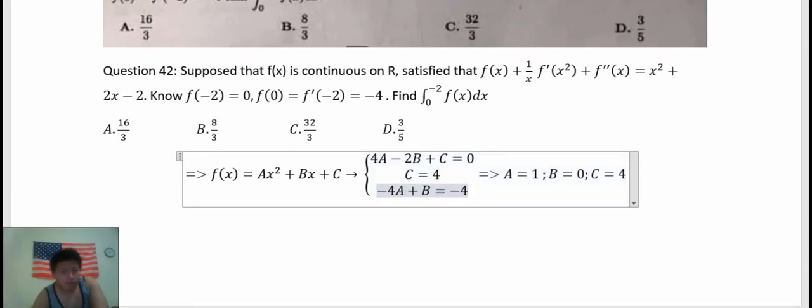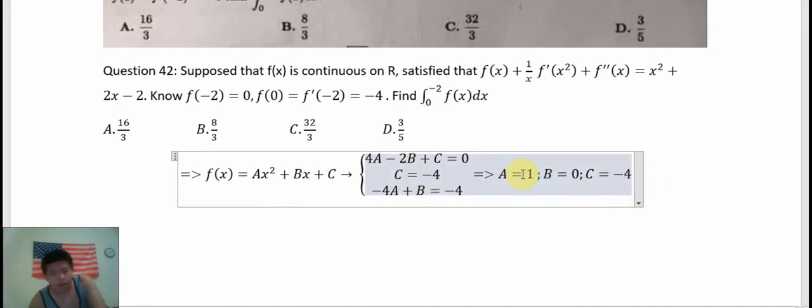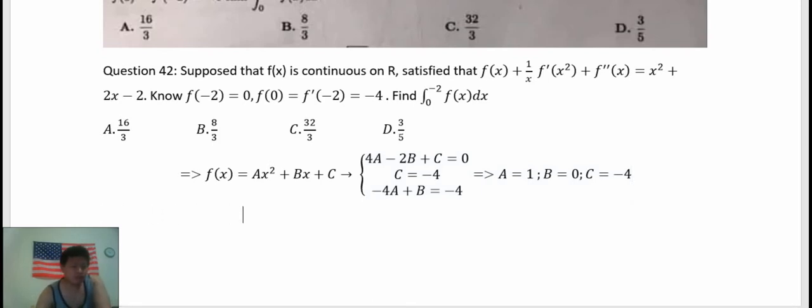So we have the function. A equals 1, B equals 0, C equals -4. Therefore, the function f(x) is x² - 4.